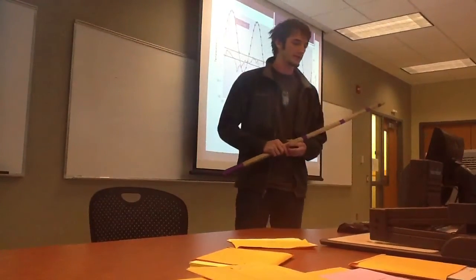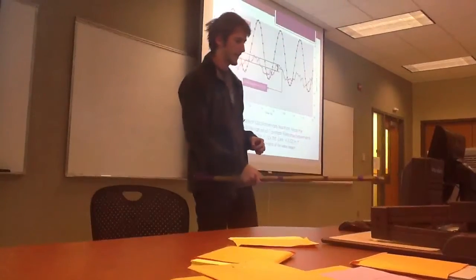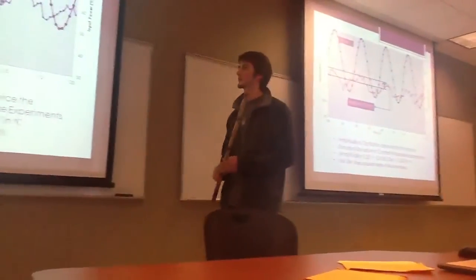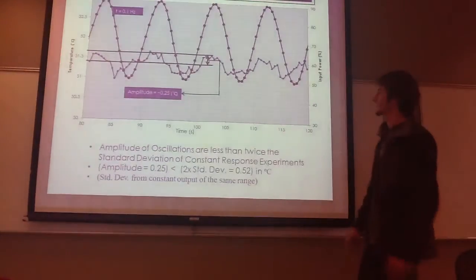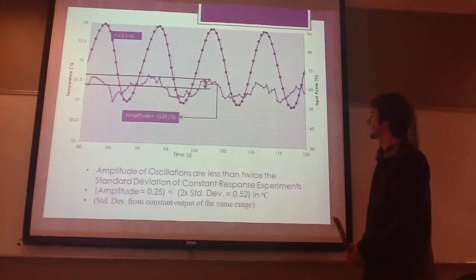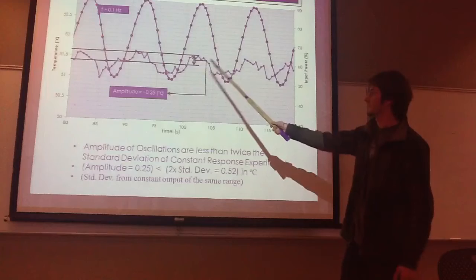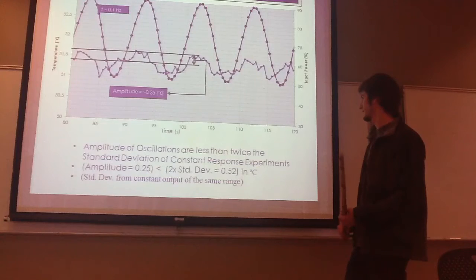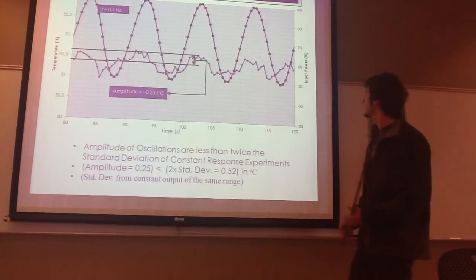This is what I was talking about earlier, the deterioration of the output. Online, Dr. Henry said that if the amplitude of the oscillations are less than twice the standard deviation of a constant response experiment in the same area, then it is negligible. So, this is the amplitude, this is actually the last experiment we used as far as frequency, so this is the highest frequency we used in our data. And it has an amplitude of like 0.25 degrees Celsius, which is extremely low. And this is actually one of the last ones where you can actually notice an oscillation. And the standard deviation for the same range for the constant was only 0.52, so it was way less. So even this is measurable, but you can see it's actually pretty close to our ultimate frequency. So we kept it.